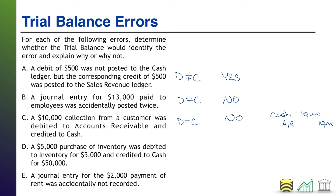Error D: a $5,000 purchase of inventory was debited to inventory for $5,000 and credited to cash for $50,000. The right accounts are used in the right positions, but the debit amount differs from the credit amount. Ultimately, debits and credits will not equal each other, so this will be caught by the trial balance.